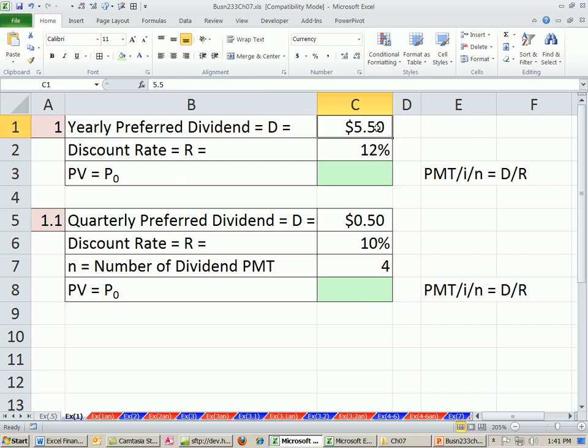We have a yearly preferred dividend. It is $5.50. And the discount rate is 12%. I like formulas that are this easy. Our dividend divided by our discount rate. This is n equal to 1. So boom, our stock is $45.83.